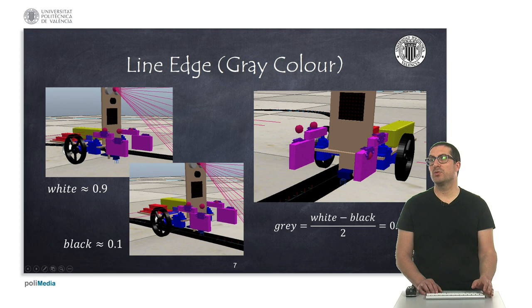While if we move the robot to an area which is white, then the expected return value will be approximately 0.9.